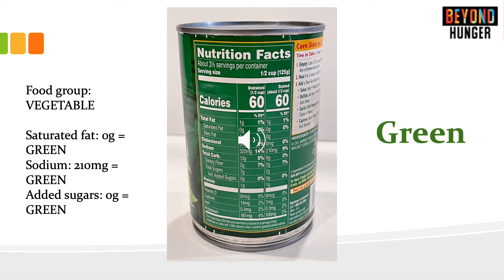This is a can of corn. We're going to focus on the column on the right for the serving that is one-third cup of drained corn. Canned corn is considered a vegetable. It has 0 grams of saturated fat, which is green; 210 milligrams of sodium, which is green; and 0 grams of added sugar, which is green. This can of corn is considered a green food.